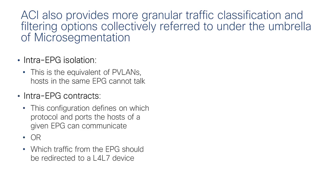The second feature is intra-EPG contracts — the ability to do filtering within the same EPG instead of just across different EPGs. This feature allows not just filtering but also traffic redirection within the same EPG, for example, sending traffic to a firewall.